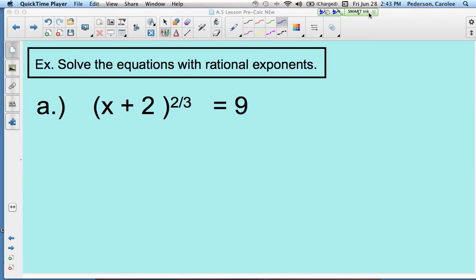Here's an example of solving an equation with a rational exponent. We have a rational exponent. Rational means fraction, and here it is - it's two-thirds.